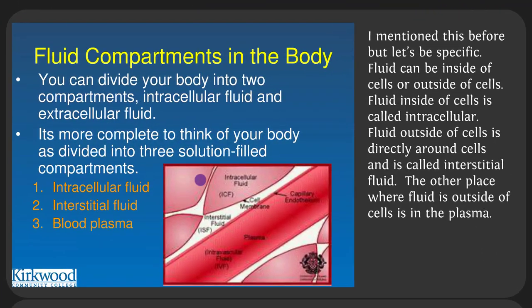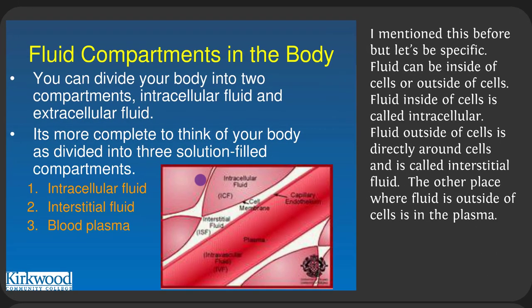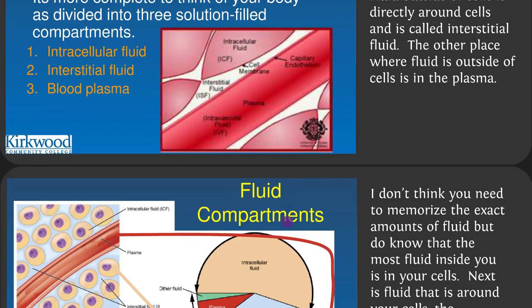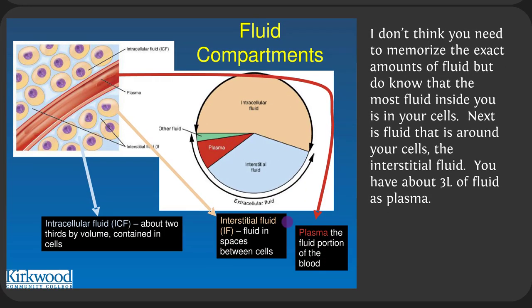Let's revisit fluid compartments. Fluid can be inside of cells — intracellular — or outside of cells. Fluid outside of cells but directly in contact with cells is called interstitial fluid. The other place where fluid is found is in the plasma. You have about 3 liters of plasma because about half of your blood is plasma. The basic order to know is: most fluid is inside cells, then interstitial fluid outside of cells, then plasma, with smaller amounts like CSF as well.